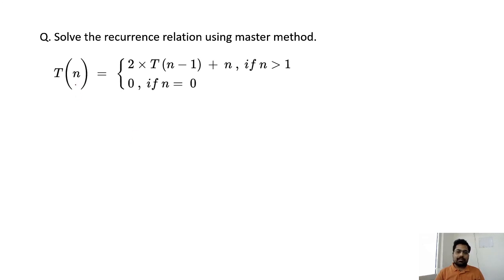As per the question, we first have to check which type of function is there. So here it is a decreasing function. Based on the decreasing function, the template could be a times T(n-b) plus n to the power k. Other things, suppose log n or anything, is written as f(n).